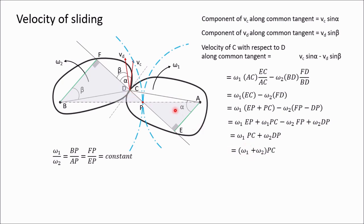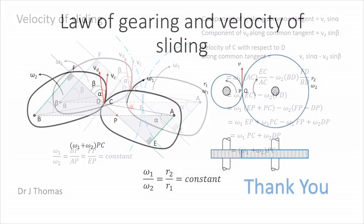In this expression, omega1 and omega2 are the angular velocities of the two gears, and PC is the distance of the contact point from the pitch point. When the contact point coincides with the pitch point, PC equals zero, so the velocity of sliding is zero at the pitch point. The velocity of sliding is maximum when the contact point is farthest from the pitch point — this occurs when the gear teeth first come into contact or just before they leave contact. Thank you for watching this video.